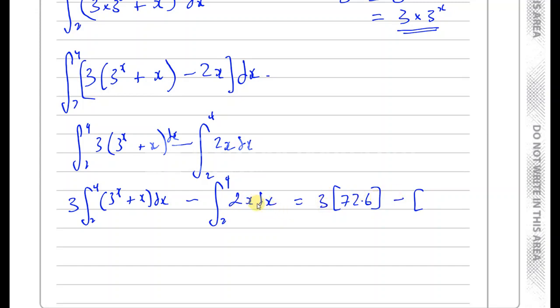So 2x integrated gives you 2x squared over 2, which is x squared. And then I've got to substitute 4 and 2 into there. And that should give me my answer.